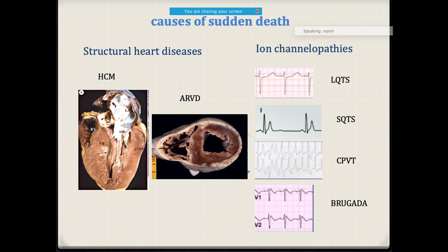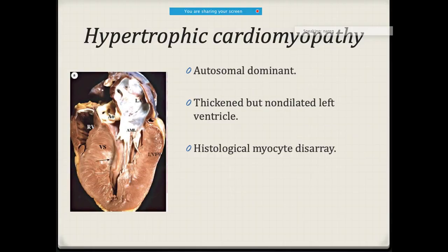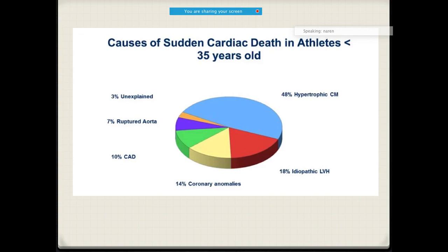Those markers which can cause sudden cardiac death — first of all, because that's how we can try to initially focus upon the management of the patient. There can be various channelopathies which can cause this problem, as well as structural heart diseases. The most common structural heart diseases we come across are ARVC and hypertrophic cardiomyopathy. There are also channelopathies like short or long QT intervals, ventricular tachycardias, catecholaminergic polymorphic VT, or Brugada syndrome. In young athletes, hypertrophic cardiomyopathy, left ventricular hypertrophy, coronary artery anomalies, or even ruptured aorta may be present.